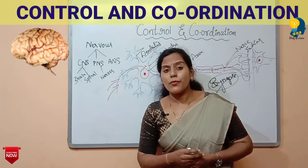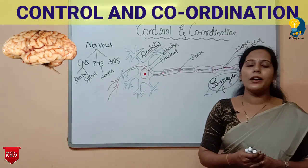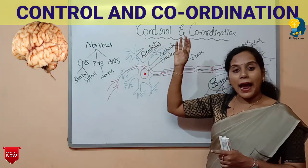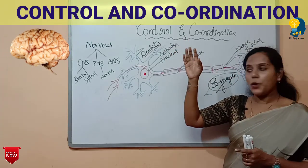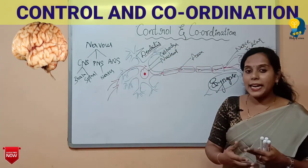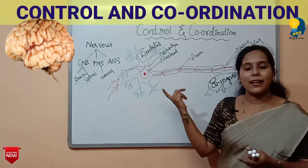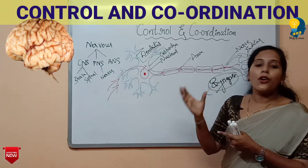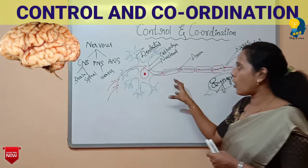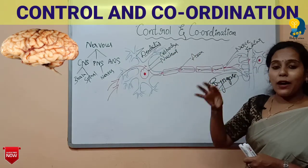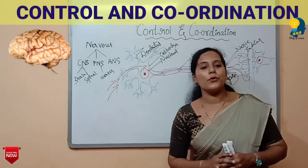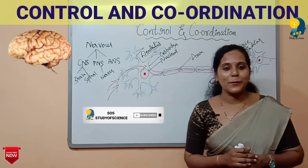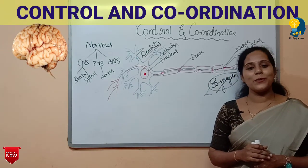In the next session we'll continue with another topic. I hope you all have understood about the nervous system and endocrine system in brief, as well as the neuron — its diagram, the different parts, and their functions. If you find this video useful, kindly like and share it with your friends, and subscribe to the channel. Thank you.